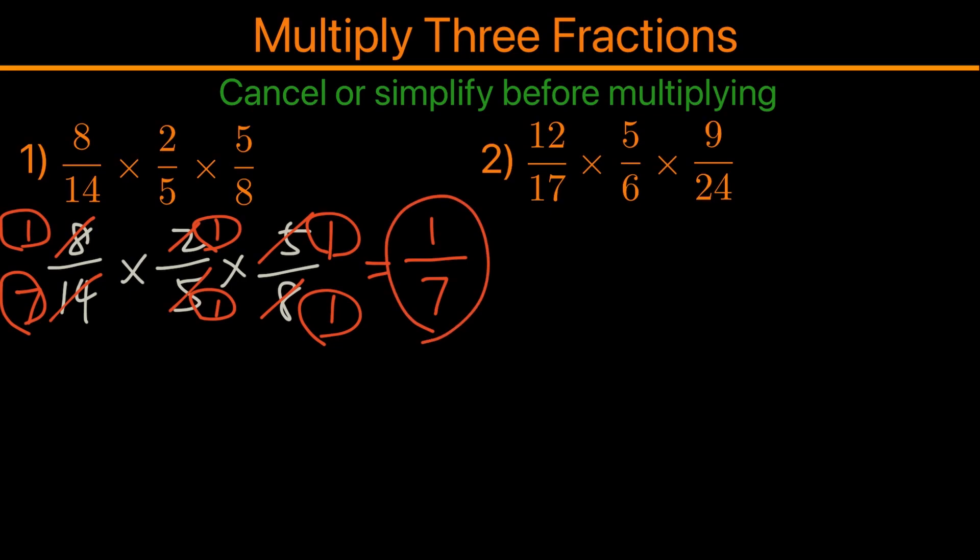Now, if you don't do that ahead of time, you will end up taking 8 times 2 times 5 and then 14 times 5 times 8, and that will become a very big number which you need to simplify afterwards to get to 1 over 7. Therefore, it's always recommended to cancel or simplify before multiplying.